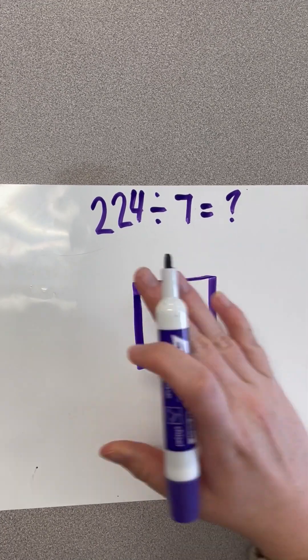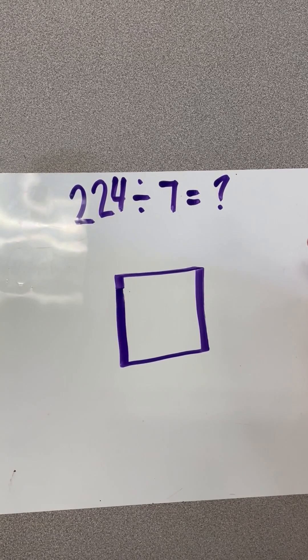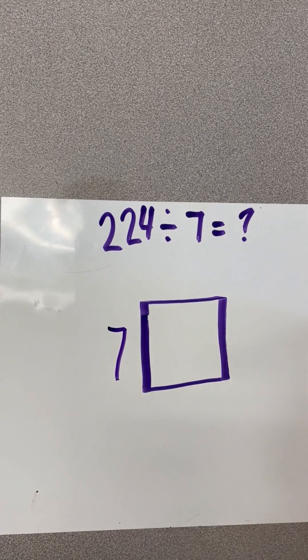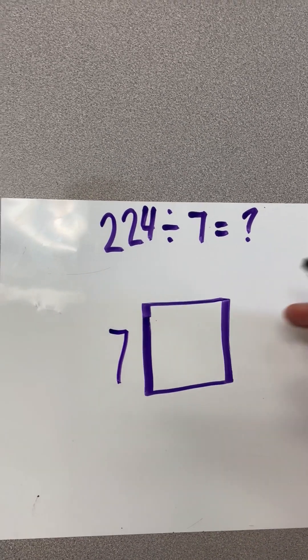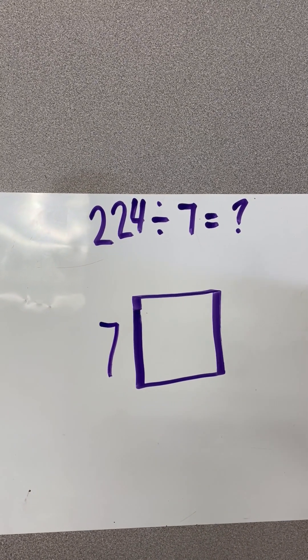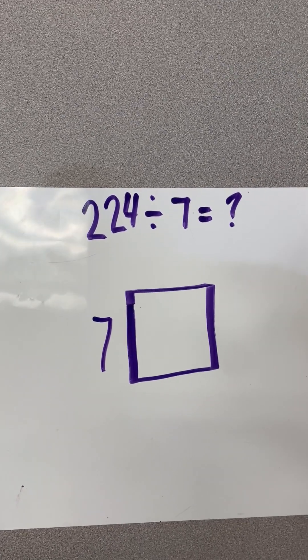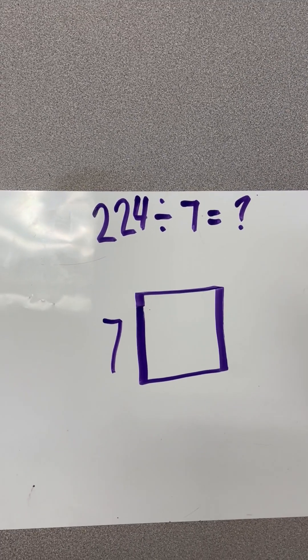I'm going to label what we do know about this problem. I'm looking at my problem and I know my divisor is 7. Now a divisor is the number that's trying to go into our dividend. It's that number that's typically smaller that we want to know how many times it can get into our larger number.